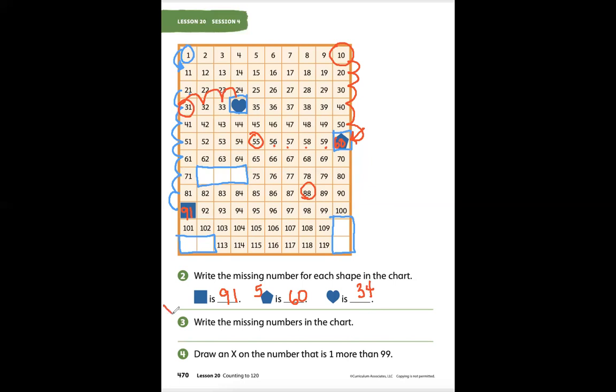Problem number three says write the missing numbers in the chart. So we have 69, 70, 71, 72, 73, 72, 73, 74. Those are all done.